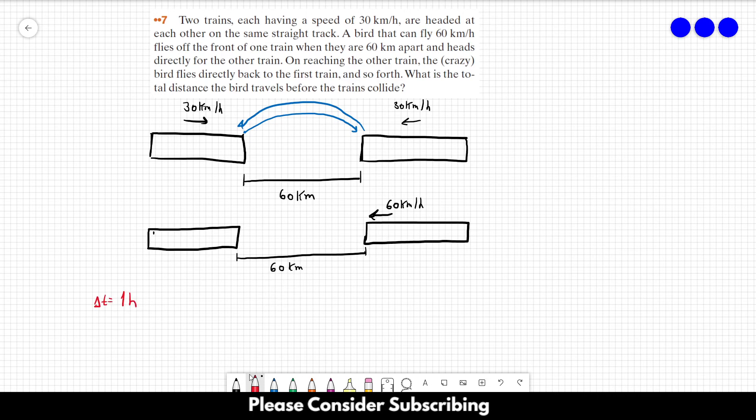So what we have to do now is calculate how far the bird can fly in one hour. Let's just remember that V equals delta X over delta T. We could use the equation to calculate this one hour here, but I think it's pretty straightforward. So we want delta X equals V times delta T. The velocity of the bird is 60 kilometers per hour and the time it has is one hour.